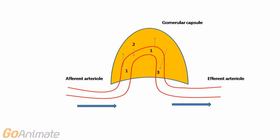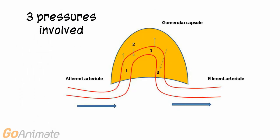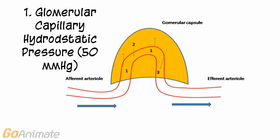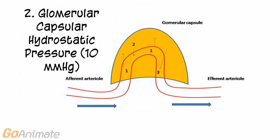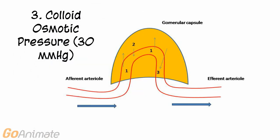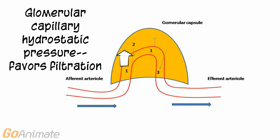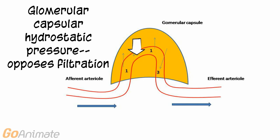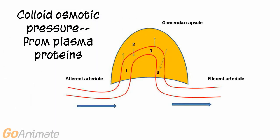Let's take a closer look at a model of the filter. There are three pressures involved in controlling the filter. Glomerular capillary hydrostatic pressure is the fluid pressure within the capillaries, running about 50 millimeters of mercury. Glomerular capsular hydrostatic pressure is the fluid pressure within the glomerular capsule, running about 10 millimeters of mercury. Colloid osmotic pressure runs about 30 millimeters of mercury. Glomerular capillary hydrostatic pressure favors filtration, while glomerular capsular hydrostatic pressure and colloid osmotic pressure both oppose filtration.